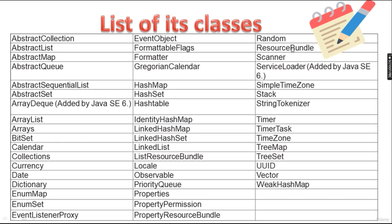The classes of the Collection Framework include: AbstractCollection, AbstractList, AbstractMap, AbstractQueue, AbstractSequentialList, AbstractSet, ArrayDeque (added by Java 6), ArrayList, Calendar, Collection, Currency, Date, Dictionary, EnumMap, EnumSet, EventListenerProxy, EventObject, FormatableFlags, Formatter, GregorianCalendar, HashMap, HashSet, IdentityHashMap, LinkedHashMap, LinkedHashSet, LinkedList, ListResourceBundle, Locale, Observable, PriorityQueue, Properties, PropertyPermission, PropertyResourceBundle, Random, ResourceBundle, Scanner, ServiceLoader (added by Java 6), SimpleTimeZone, StringTokenizer, Timer, TimerTask, TreeMap, TreeSet, UUID, Vector, and WeakHashMap.